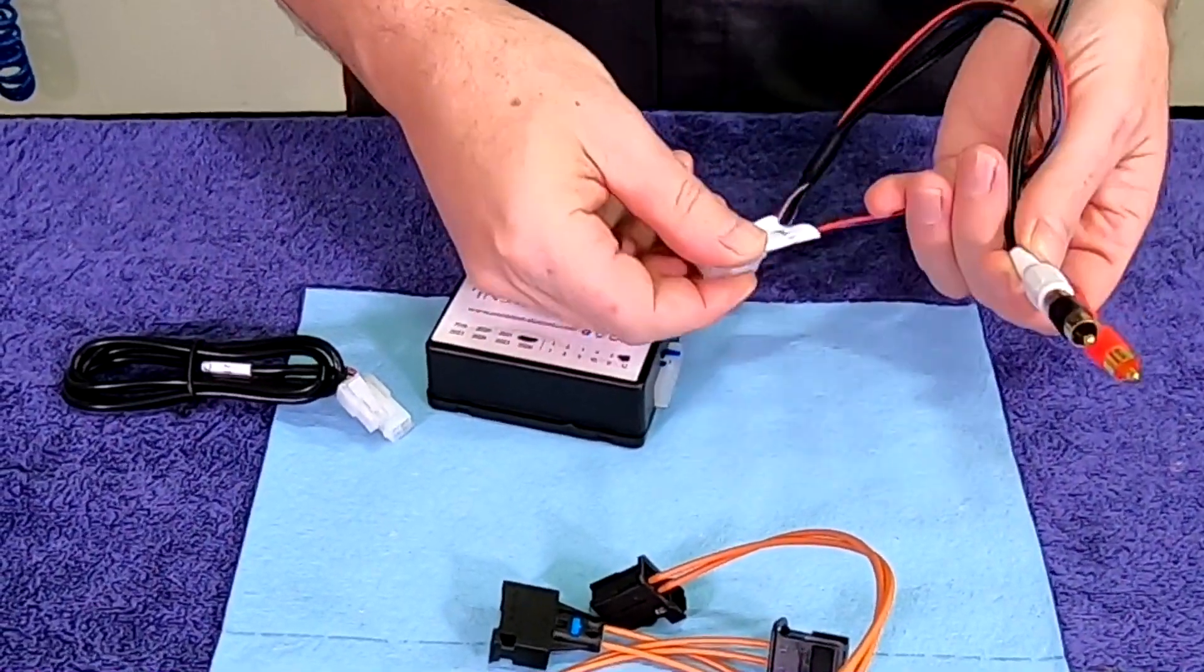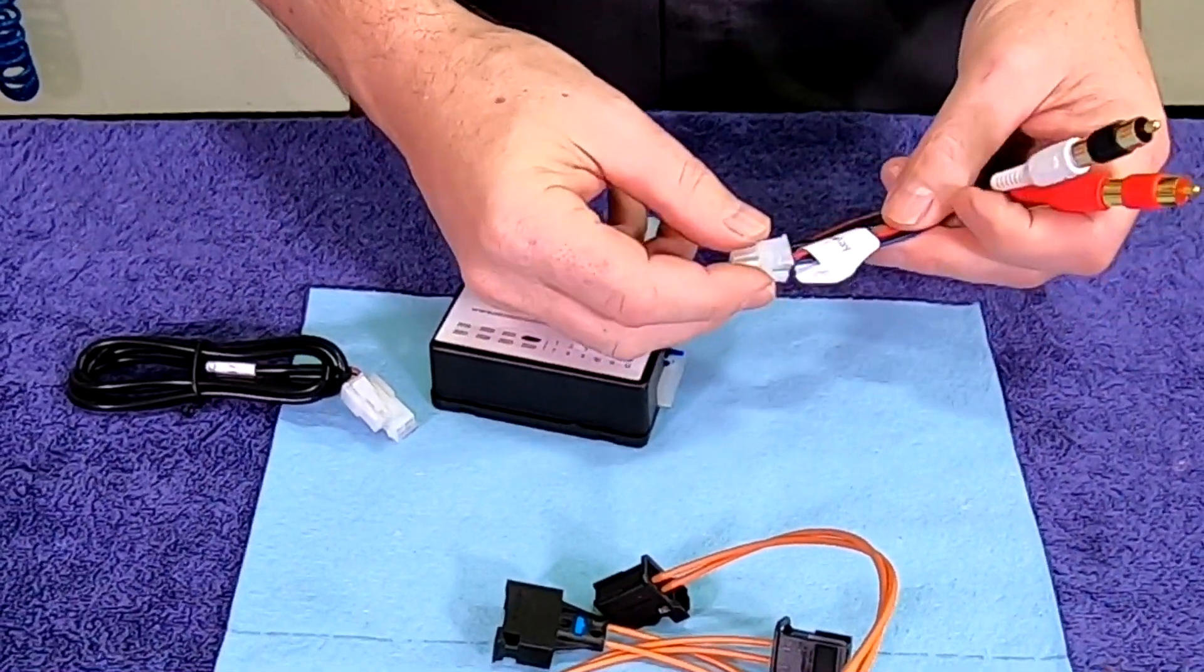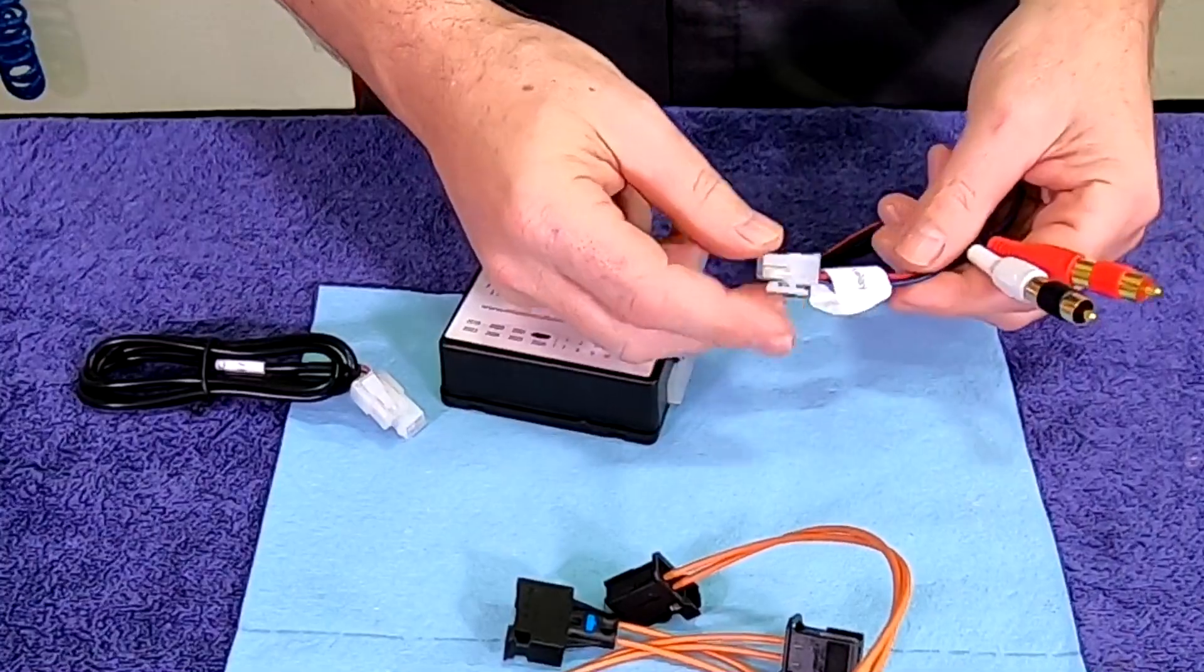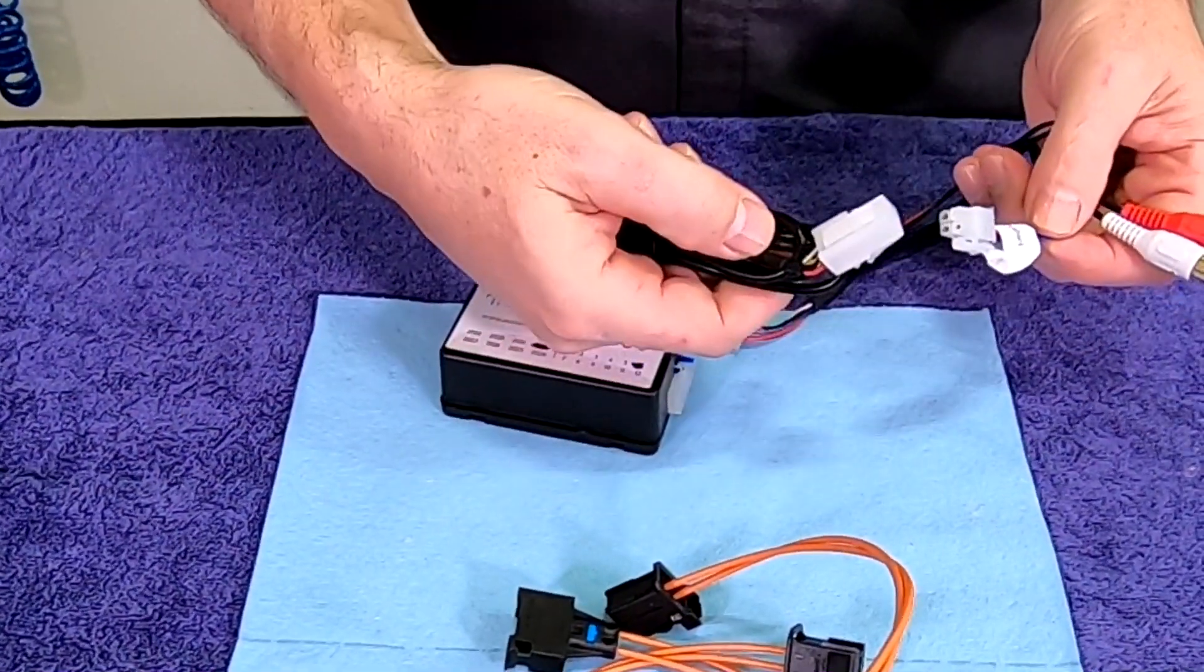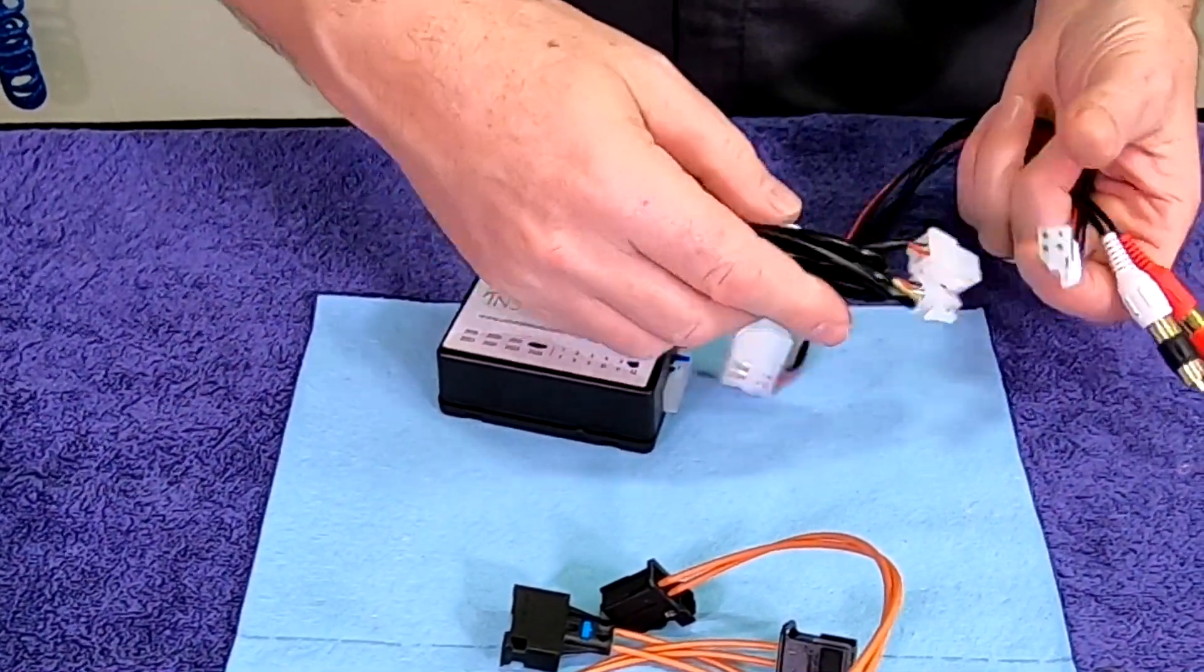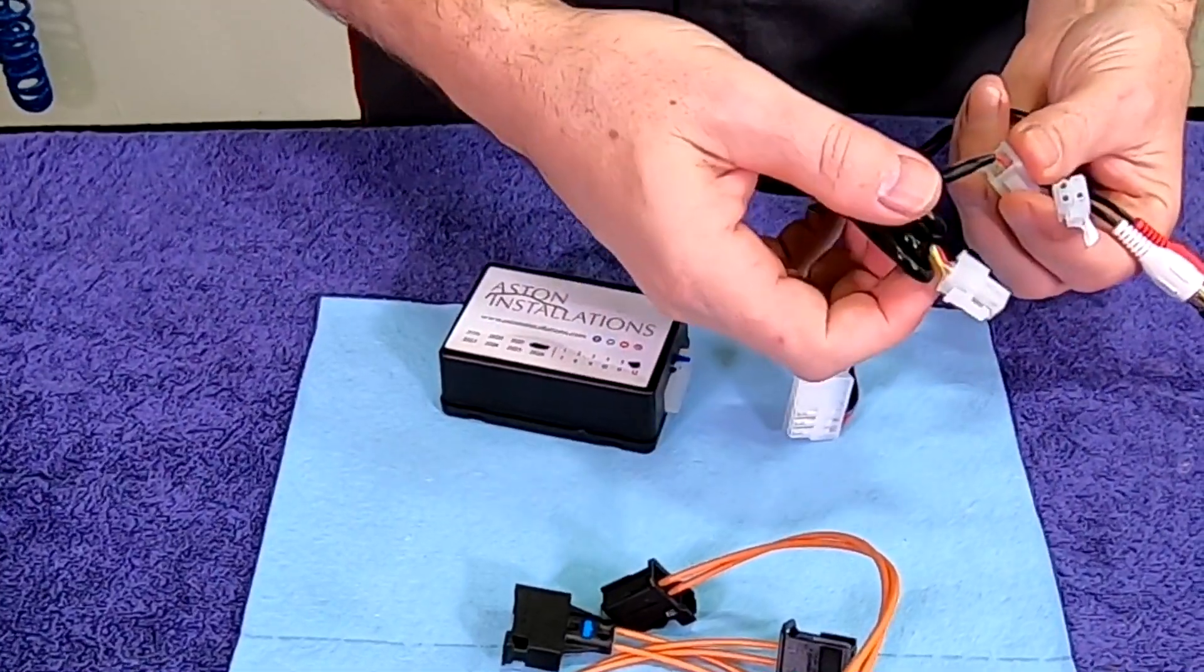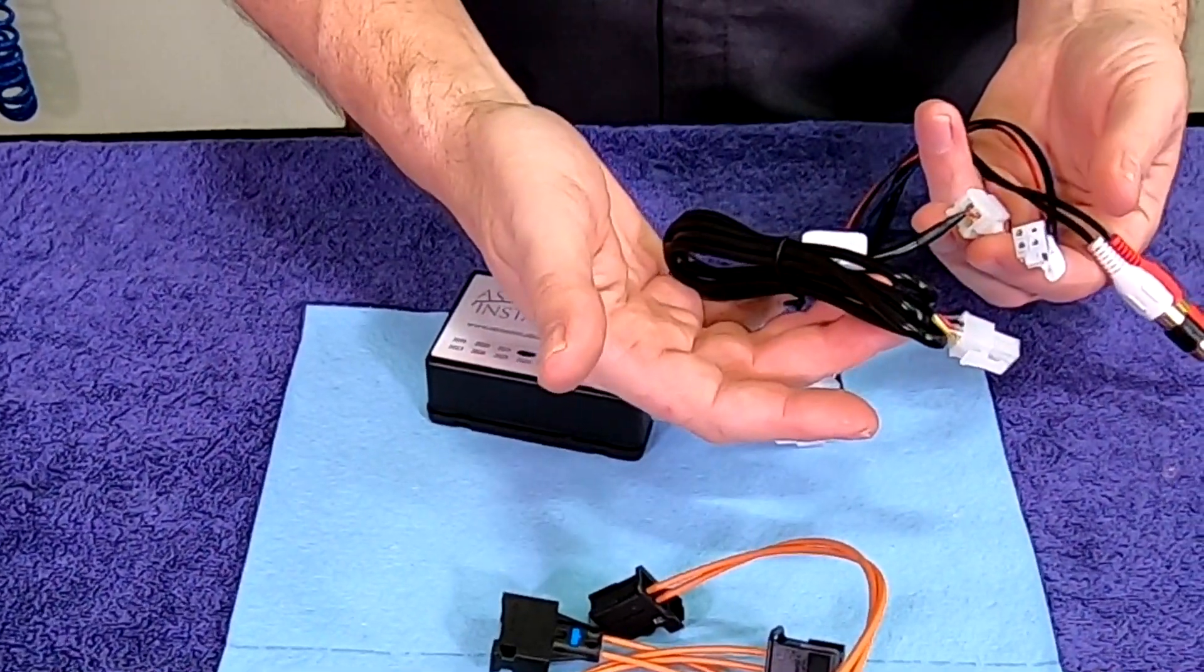Coming off of this is a stereo set of RCA jacks, good old red and white right and left channel. And then here is the wiring harness that powers the MOST relay, and they've given us an extension cable to go with that so this will be able to reach further to where the rest of the wiring harness will be.